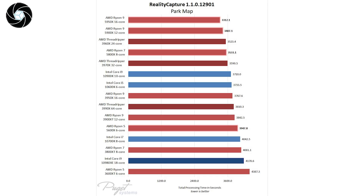Reality Capture. This is where things get even more interesting — the Ryzen 9 5950X is the fastest processor tested in Reality Capture by Puget Bench. The 5900X and 5800X are closely behind, and all three outperform even the Threadripper processors. The 5000 series offers a perfect core count and per-core performance for this application. The only caveat is the 128GB RAM limit on Ryzen processors; if you need more, Threadripper offers double that capacity.